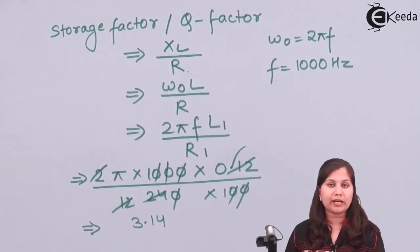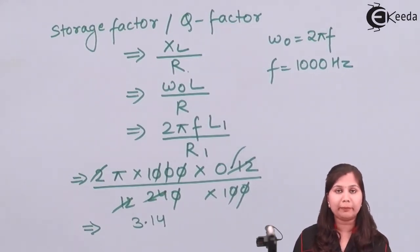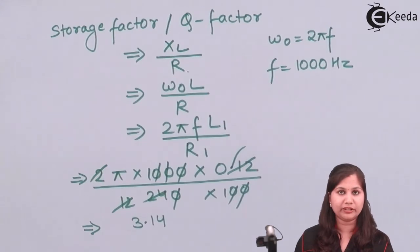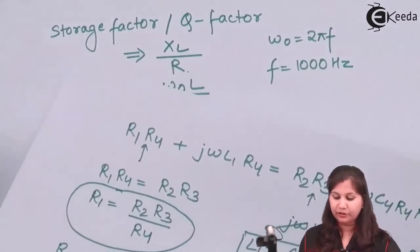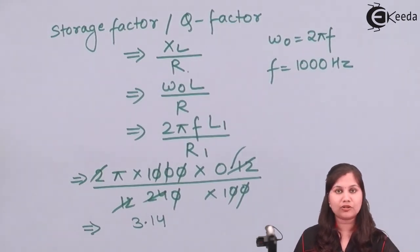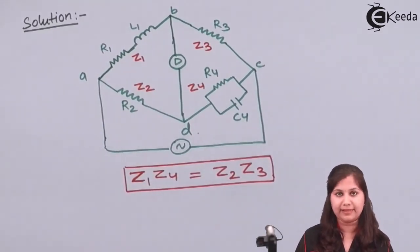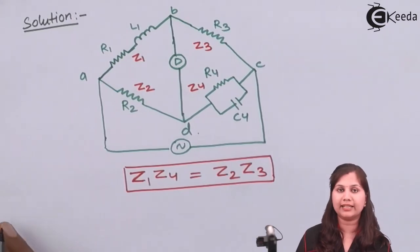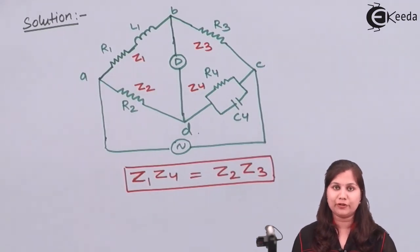In this way we can measure the value of inductance using the Maxwell inductance capacitance bridge. There is no need to remember the balance equations — you can derive them at the time of solving. You just need to remember the bridge circuit and use the balance equation Z1·Z4 = Z2·Z3, from which you can find inductance in terms of capacitance. The storage factor can also be calculated directly using inductive reactance divided by effective resistance. I hope this problem is clear. Thank you.